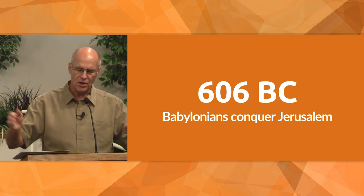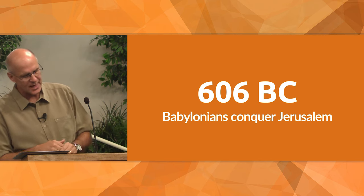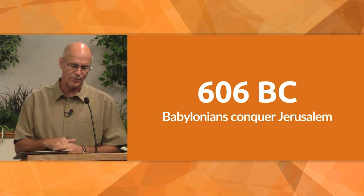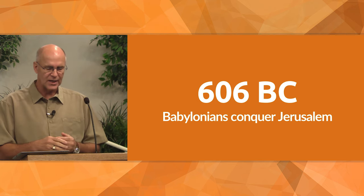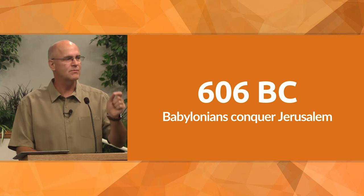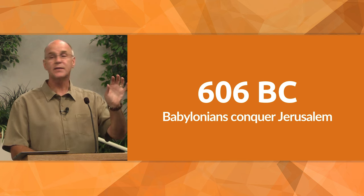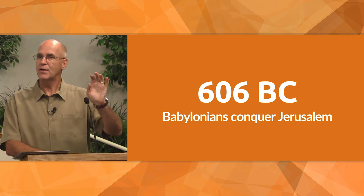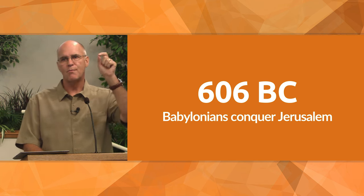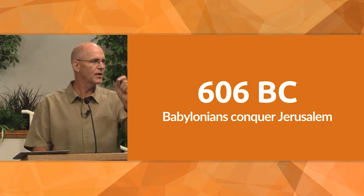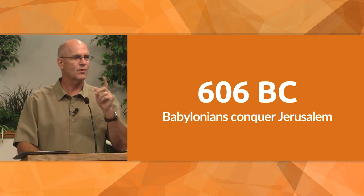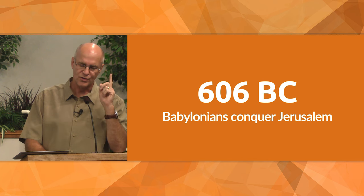Among the leaders and young nobles that were carried off at this time was a young man called Daniel, who would grow in importance and prestige in the foreign king's court because of his ability to interpret dreams and prophecy. He was bright, he was among the best and brightest, but his value to the Babylonian king was not his ability at math or politics or science — it was his ability to interpret dreams.